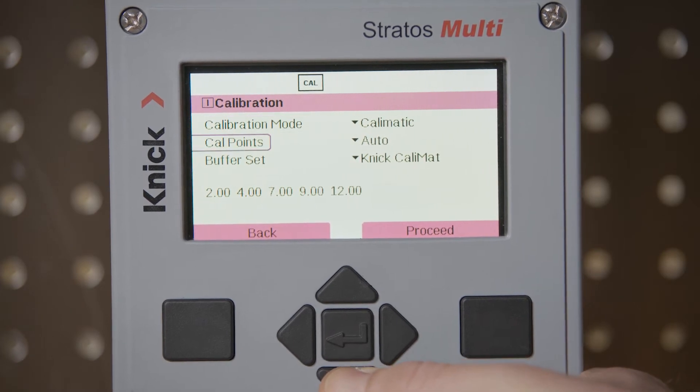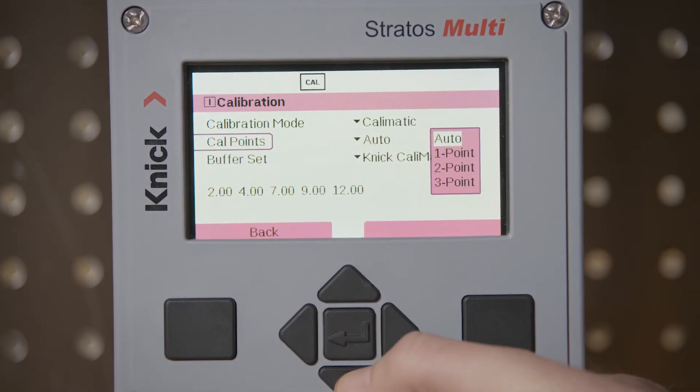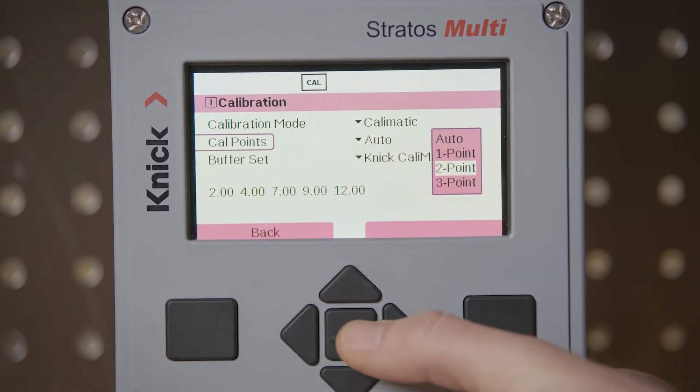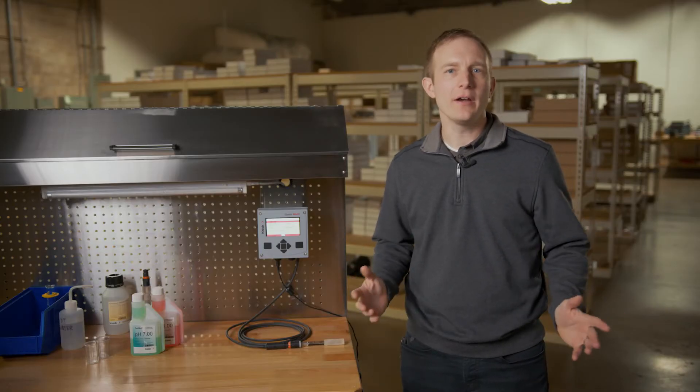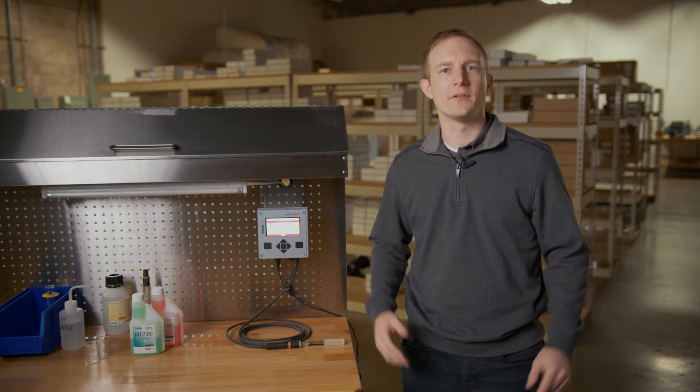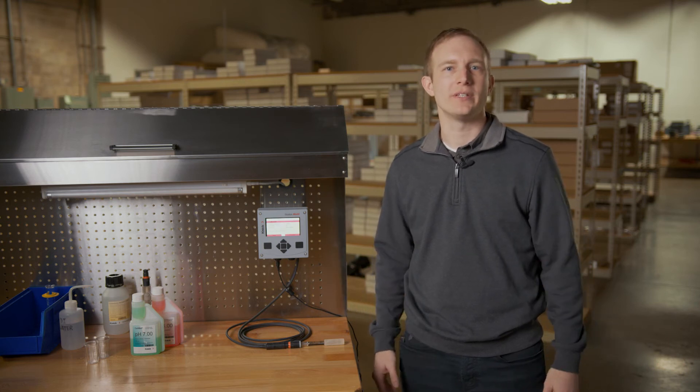Under the number of calibration points we will select two point and then move on to the selection of our buffer set. As we are performing an automatic calibration it is very important that we have the proper buffer set selected in our Stratus Multi transmitter. This ensures automatic recognition of the buffer values as well as automatic temperature compensation during the calibration process.